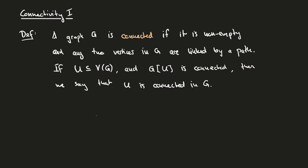Let's give some examples. First, let's consider the following graph. In this case, G is connected because we can choose any two vertices of G and find some path that goes between them. On the other hand, if we look at the following graph, which I'll call G prime, this graph is not connected because, for example, we can take these two red vertices, and there's no path in G prime that goes between them.